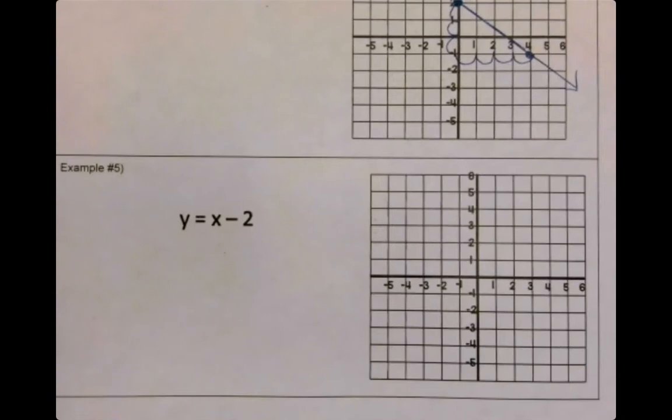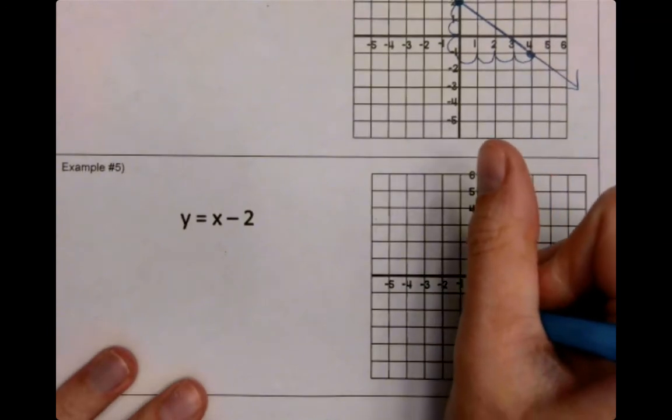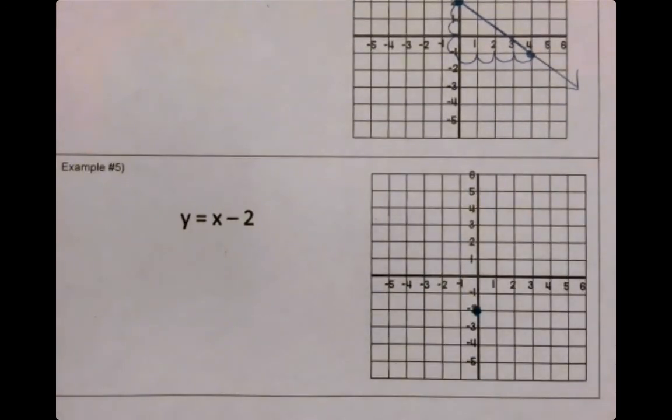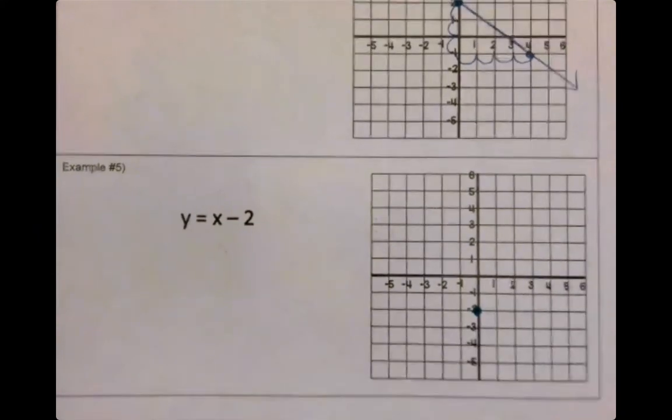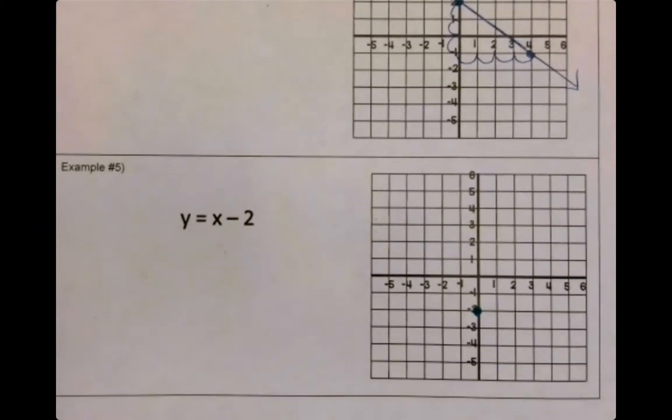All right. For this one, why don't you start by plotting the point for your B? Great job. Now some of you are going to be like, I already know what the slope is. Some of you are going to be like, it's an X. What does that even mean?